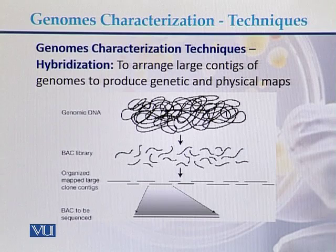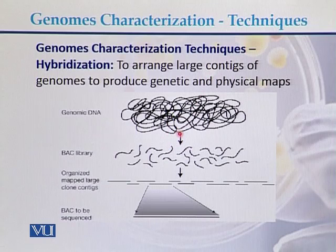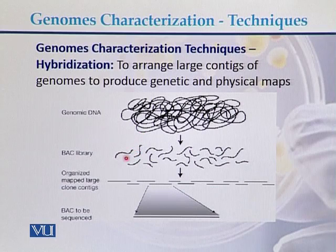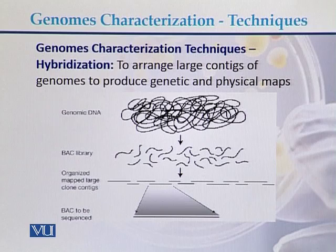In genome characterization using hybridization, the genome of a particular organism was digested with the help of restriction enzymes. Restriction enzymes converted the genome into small pieces. These small pieces were then arranged into clone contigs. To arrange these pieces in the form of clone contigs, the DNA hybridization technique was used.